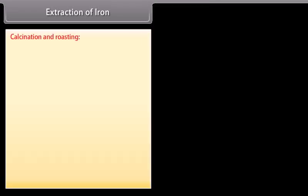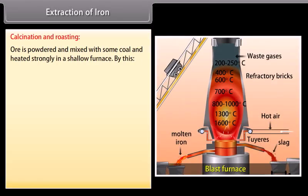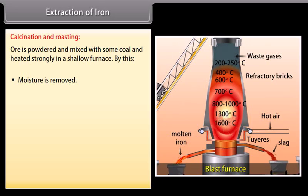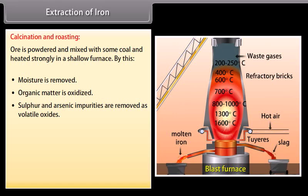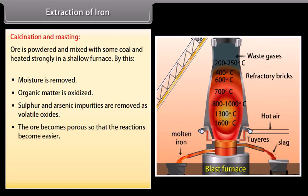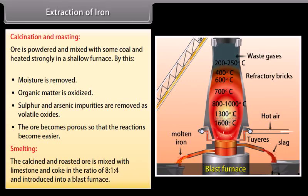Calcination and roasting: Ore is powdered and mixed with some coal and heated strongly in a shallow furnace. By this, moisture is removed, organic matter is oxidized, sulphur and arsenic impurities are removed as volatile oxides, and the ore becomes porous so that the reactions become easier. Smelting: The calcined and roasted ore is mixed with limestone and coke in the ratio of 8:1:4 and introduced into a blast furnace.